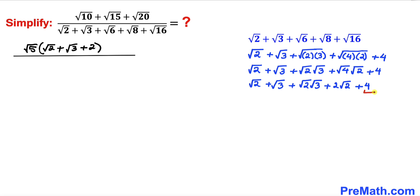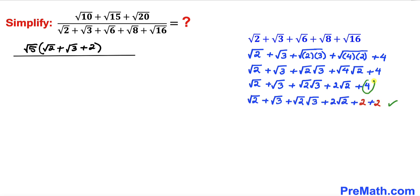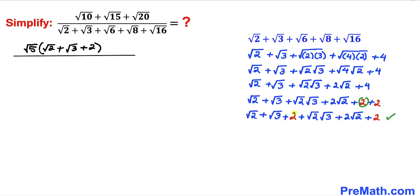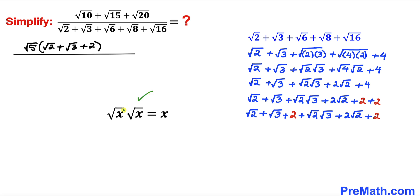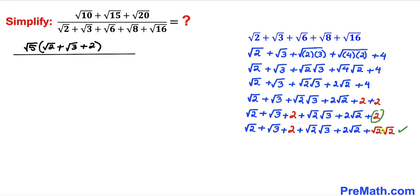Now I rewrite the 4 as 2 plus 2 and rearrange the terms. Then I rewrite one of those 2s as √2 times √2, using the property that √x · √x = x. So 2 is replaced by √2 times √2, and the rest remain the same.